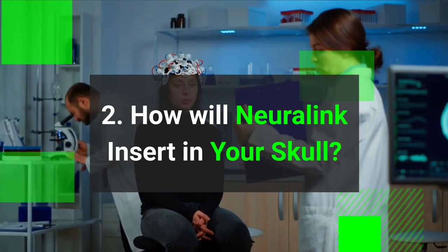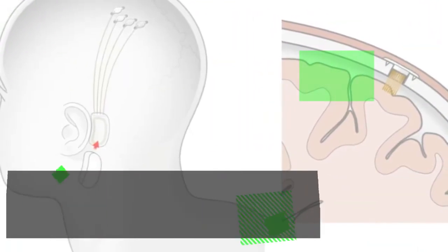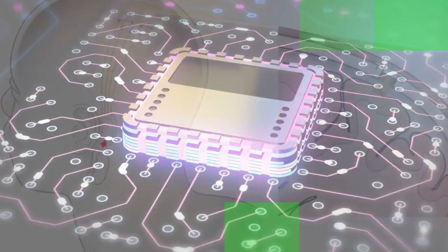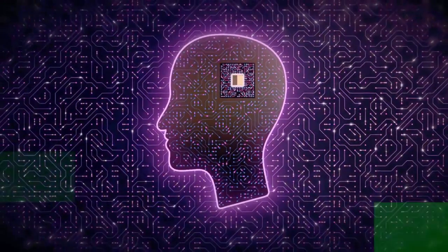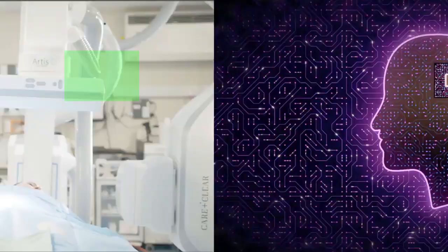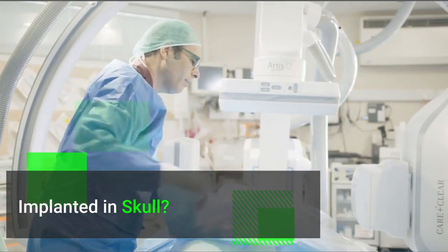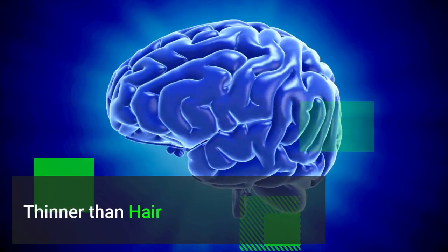How will Neuralink insert into your skull? Neuralink will be inserted in your skull with what is being called an N1 chipset, in Elon Musk's words. The chipset is 8 millimeters in diameter and has multiple wires housing electrodes and insulation for the wires. Okay, we have the setup, but how will it be introduced into our skull? Simple. These wires will be surgically placed inside our brain using a robot.